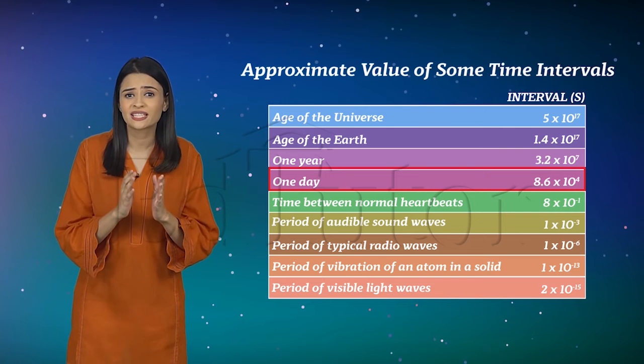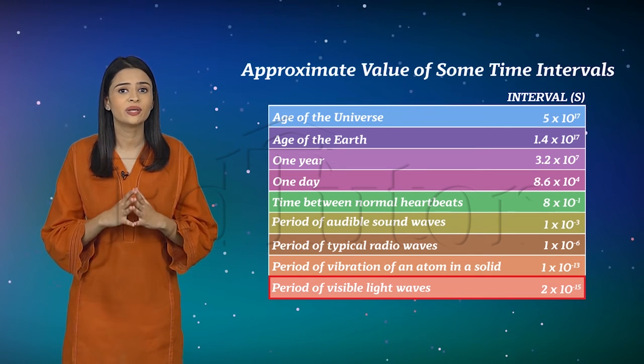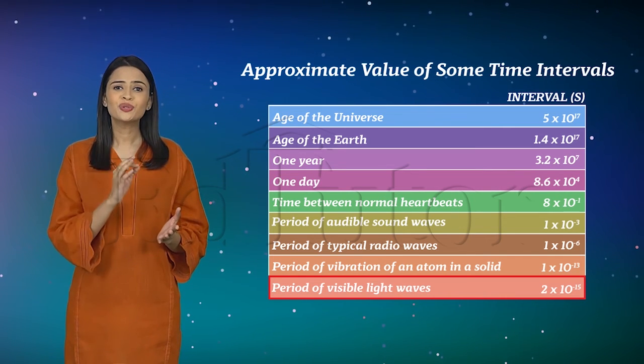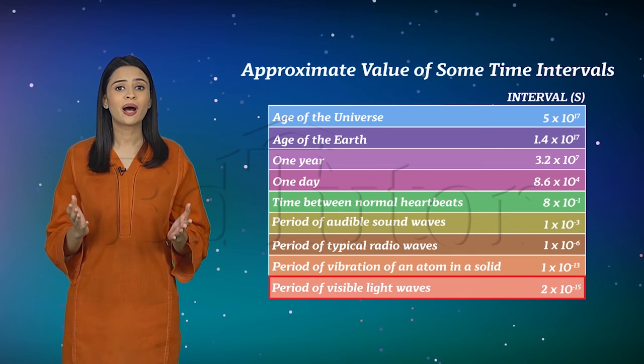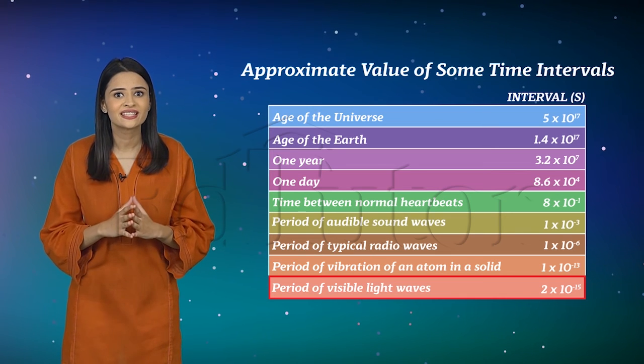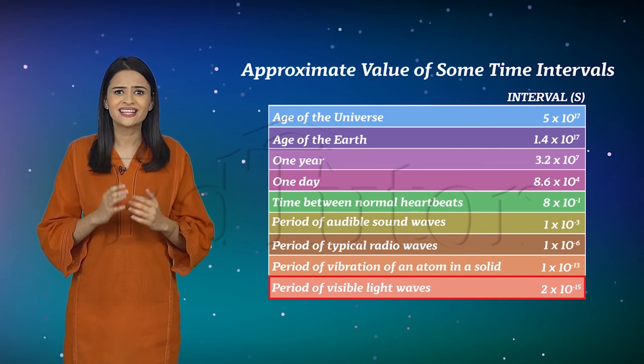The smallest time interval is the period of visible light waves. That is, 2 into 10 raised to the power minus 15 seconds. Quite small, isn't it?